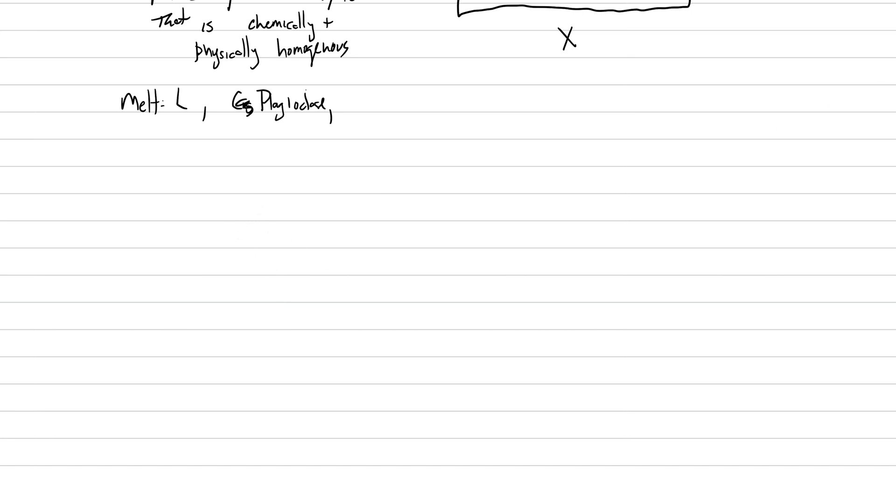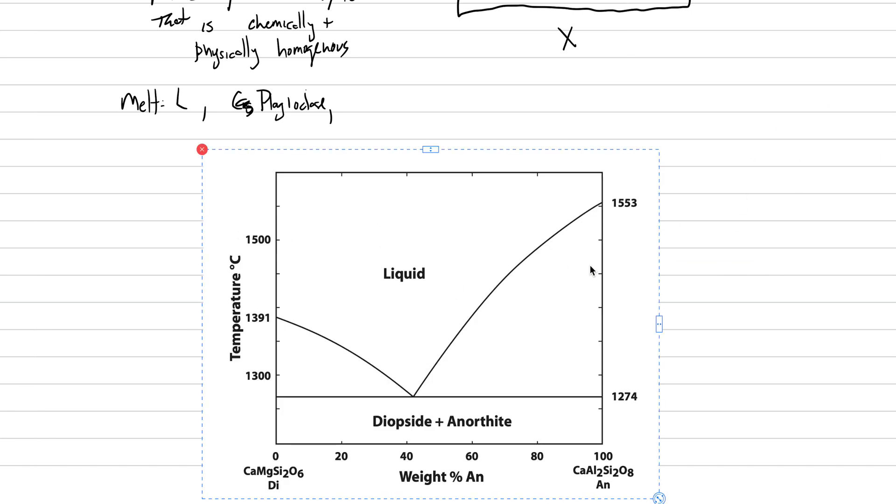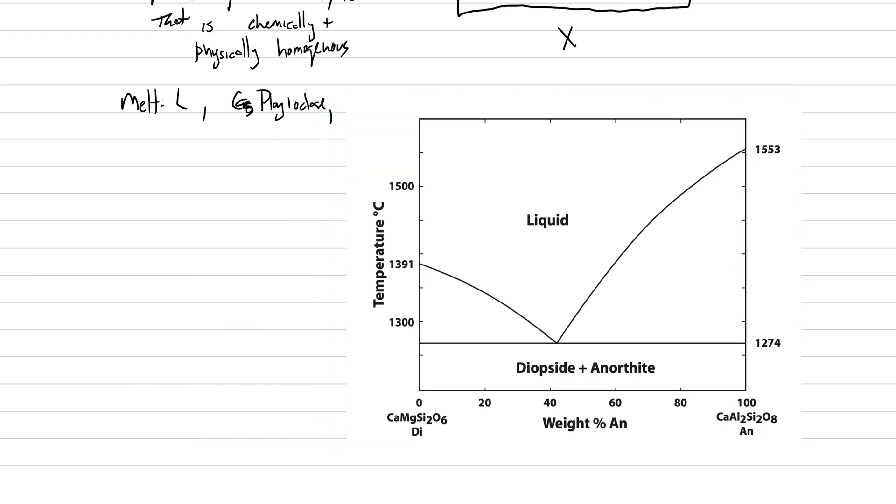And then, so the last thing we're going to do here is we're just going to draw one last... You know what? Let's actually put in a real one. Here we go. Here is the binary phase diagram that we're going to use a lot for this class and for the next two lectures, actually. And so we've got our different boundaries. We need to label a couple more things.